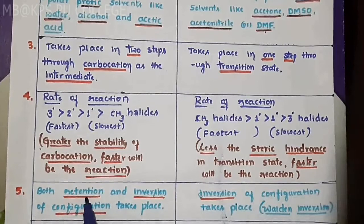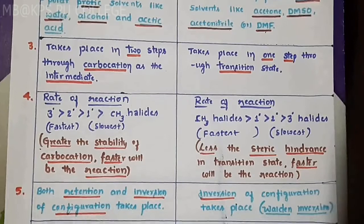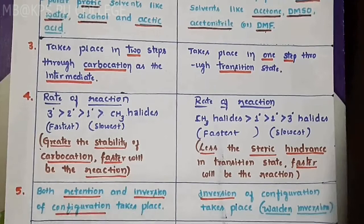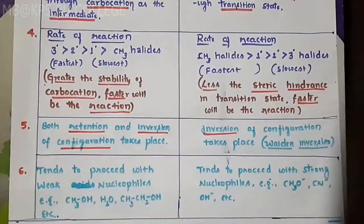Inversion of configuration means the molecules on the left side shift to the right side — this is called Walden inversion, named after scientist Walden. In SN1 mechanism, both retention and inversion of configuration occur, showing two characters. In SN2, only inversion of configuration takes place.